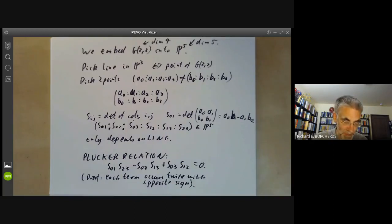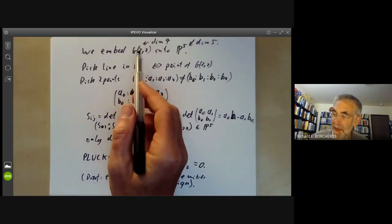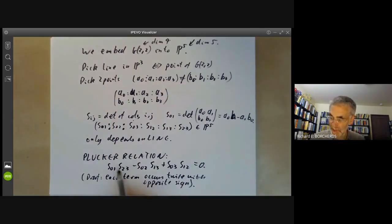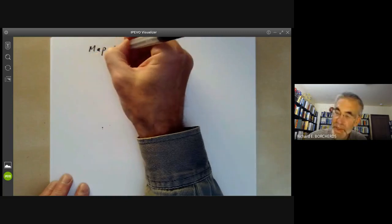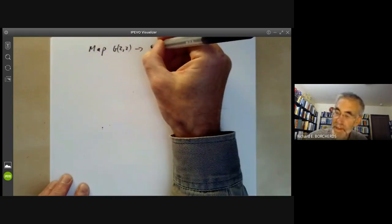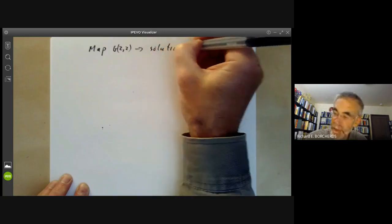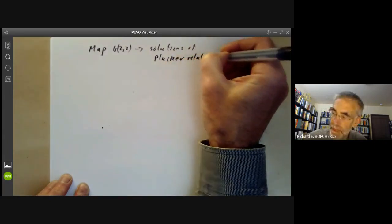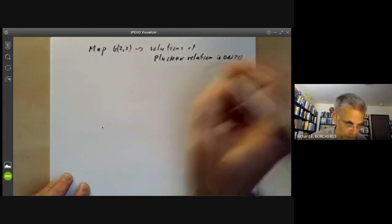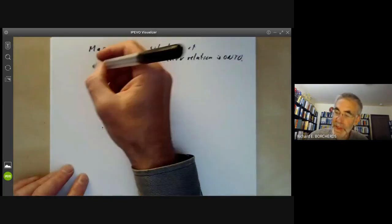Next we can ask are there any other relations satisfied by these points and the answer is no. If we've got a set of numbers Sij satisfying the Plucker relation in P5 then there is a line in G22 mapping to that point.